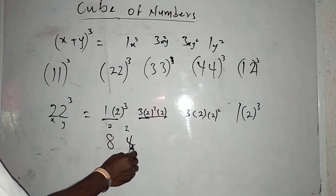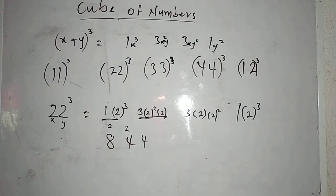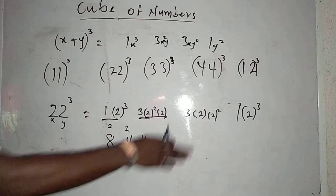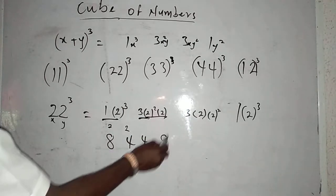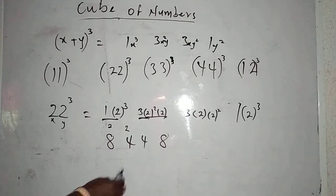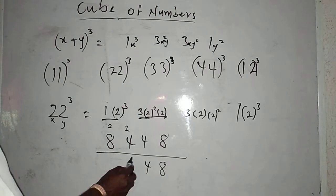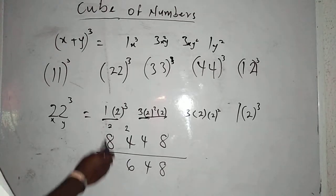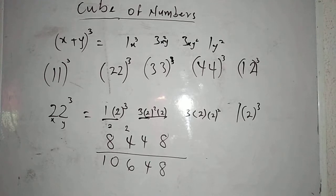I have 24, so I write 4 and carry 2. The next one: 2 times 2 times 2 is 8, times 3 is 24 again. I write 4 and carry 2. The last one is 8. So my final answer, combining and carrying: 8, 4 plus carries gives 6, then 0 and 1 — which means 10,648. So 22 cubed equals 10,648.